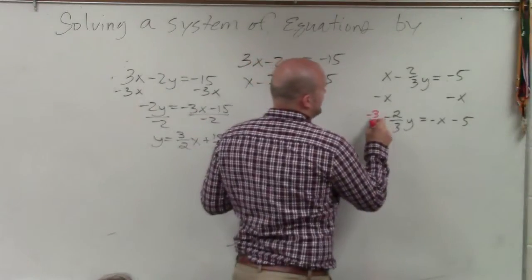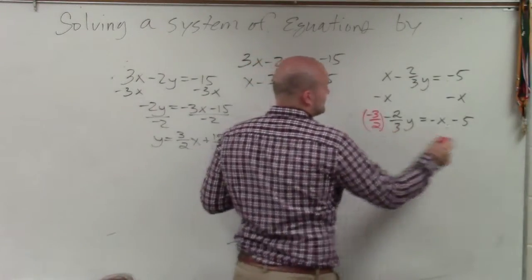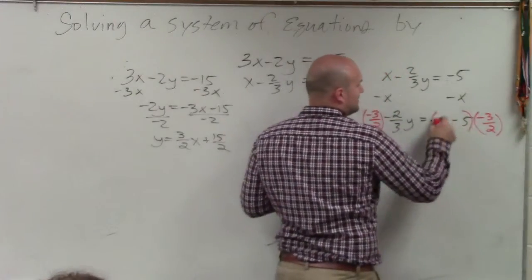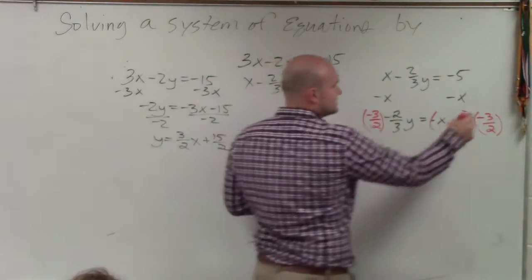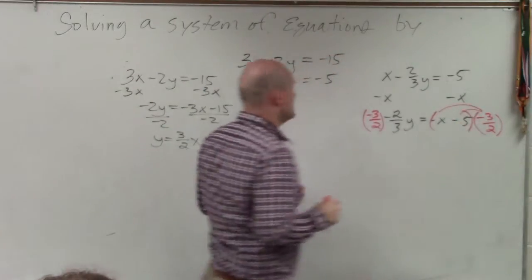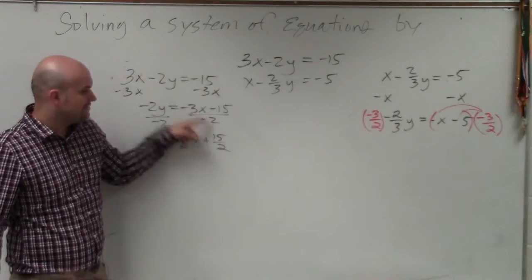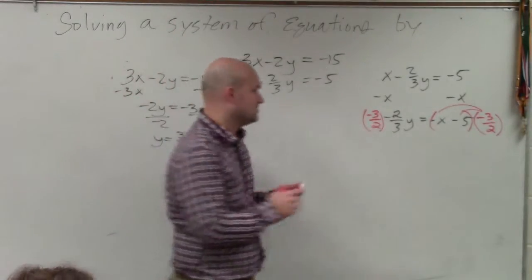So let's multiply by negative 3 halves. Now, remember, when you multiply a quantity by a number, you have to put it in parentheses. Because that's telling you you have to multiply both the quantities. Just like when you divide, you have to divide both the numbers. When you multiply, you have to multiply both the numbers.